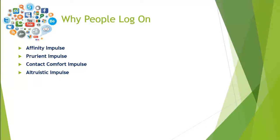A fourth impulse is the altruistic impulse. This drives people to participate online and specifically in social media because they want to do something good. It could be following or supporting a cause on a social media platform, sharing information about a cause or an event or a foundation with your friends, or connecting with others to meet a common goal — like interacting with people who share the same beliefs or work for the same charities. That all drives the altruistic impulse in getting people online and connected.